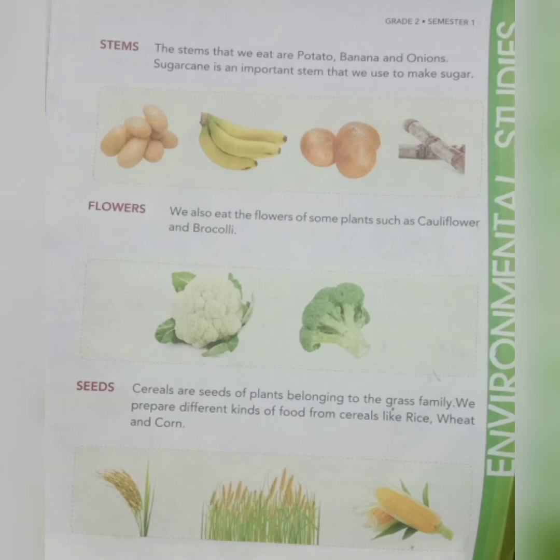Potato and sugar cane. Sugar cane is an important stem. We use it to make sugar. Cauliflower and broccoli are flowers of plants that we can eat. Next is seeds.